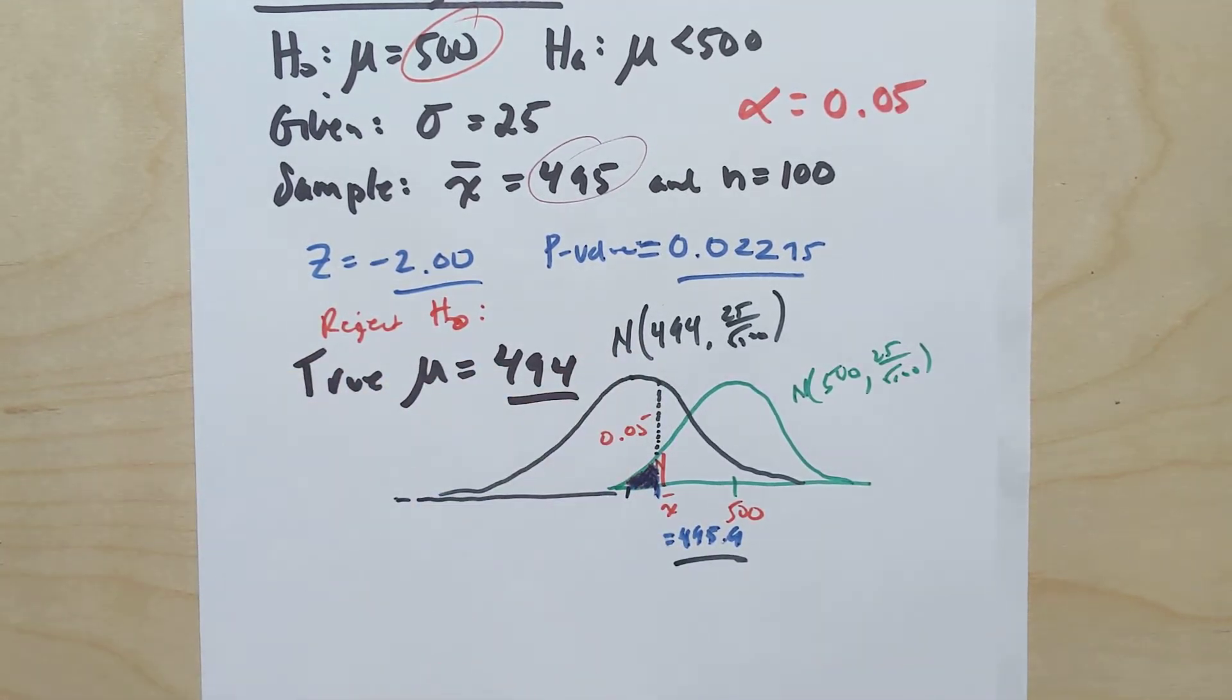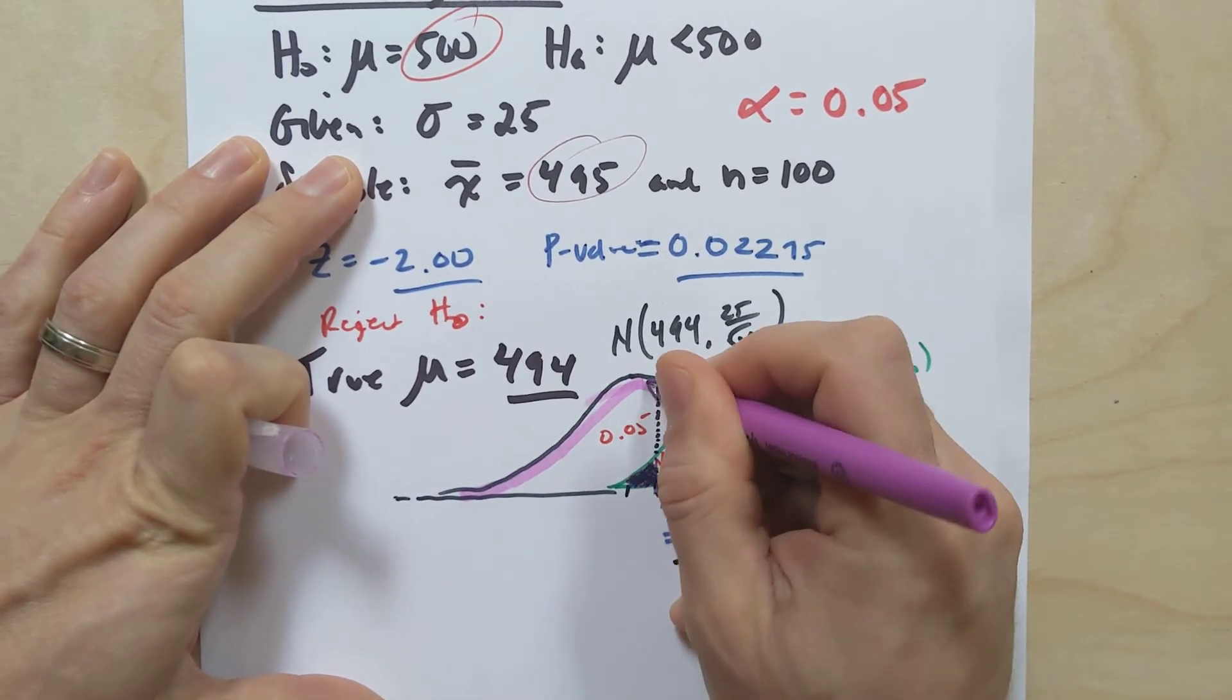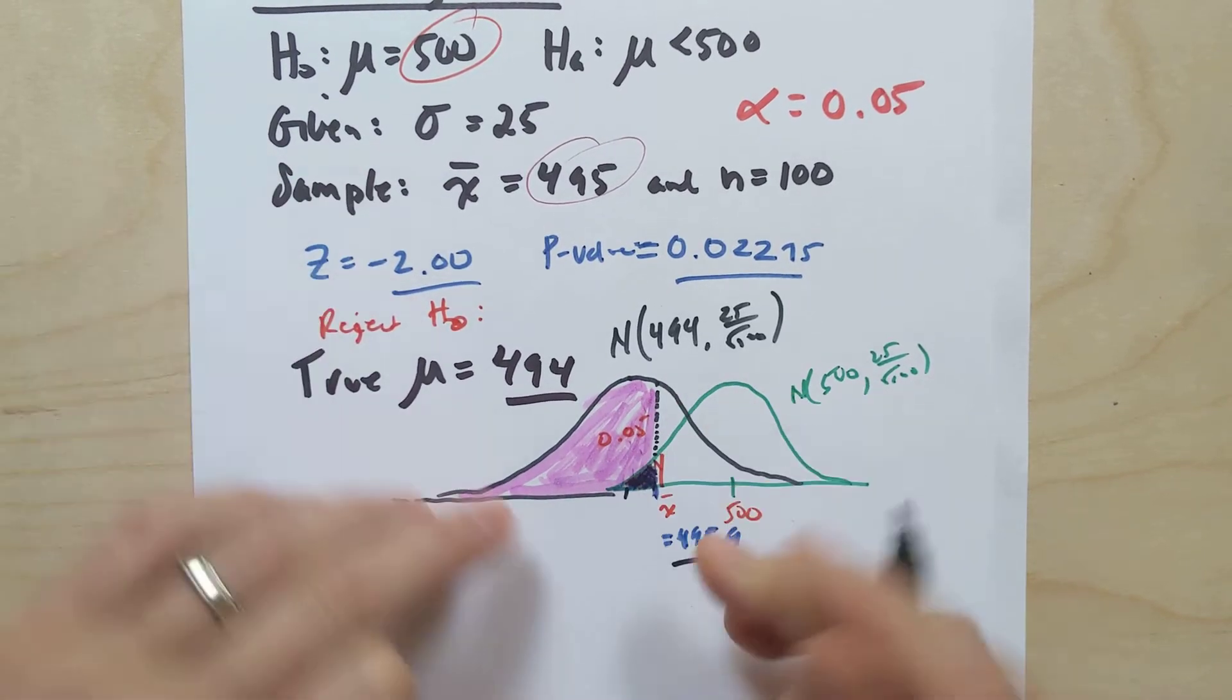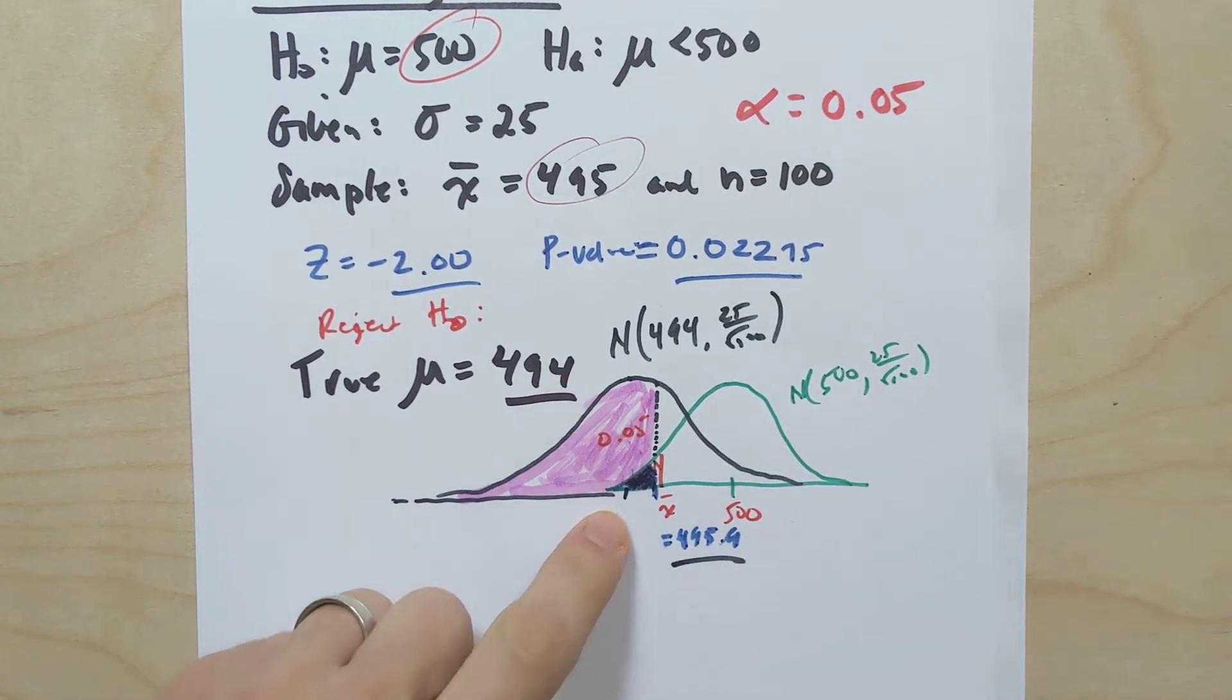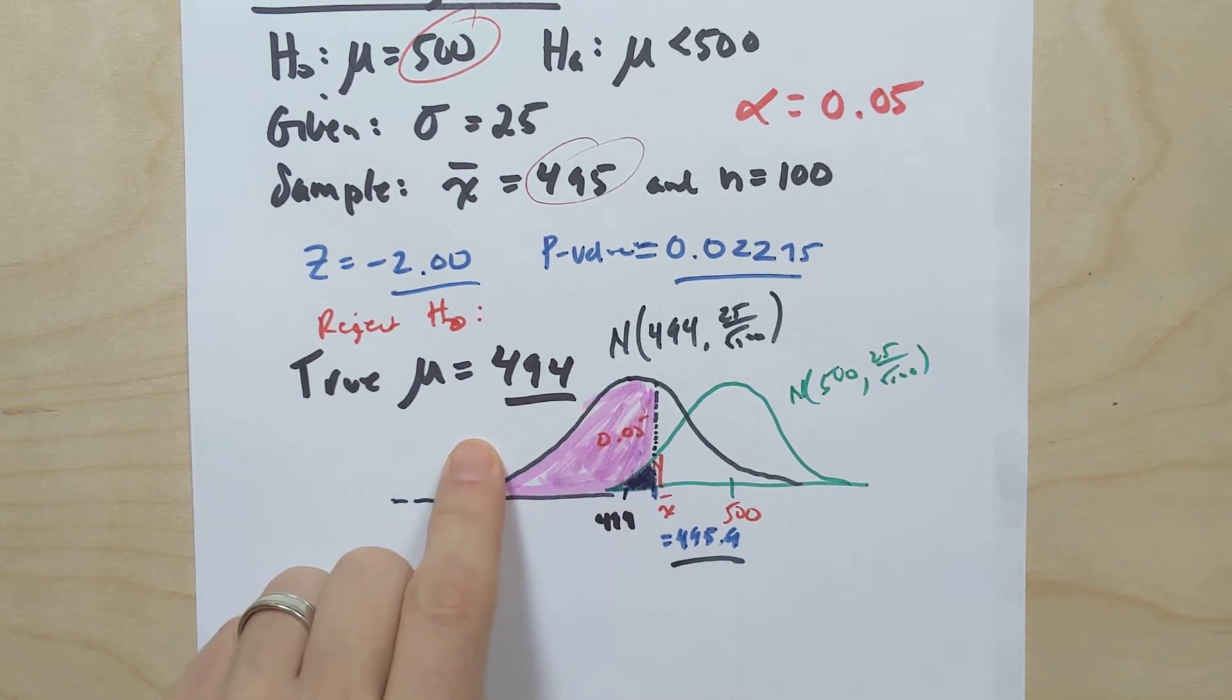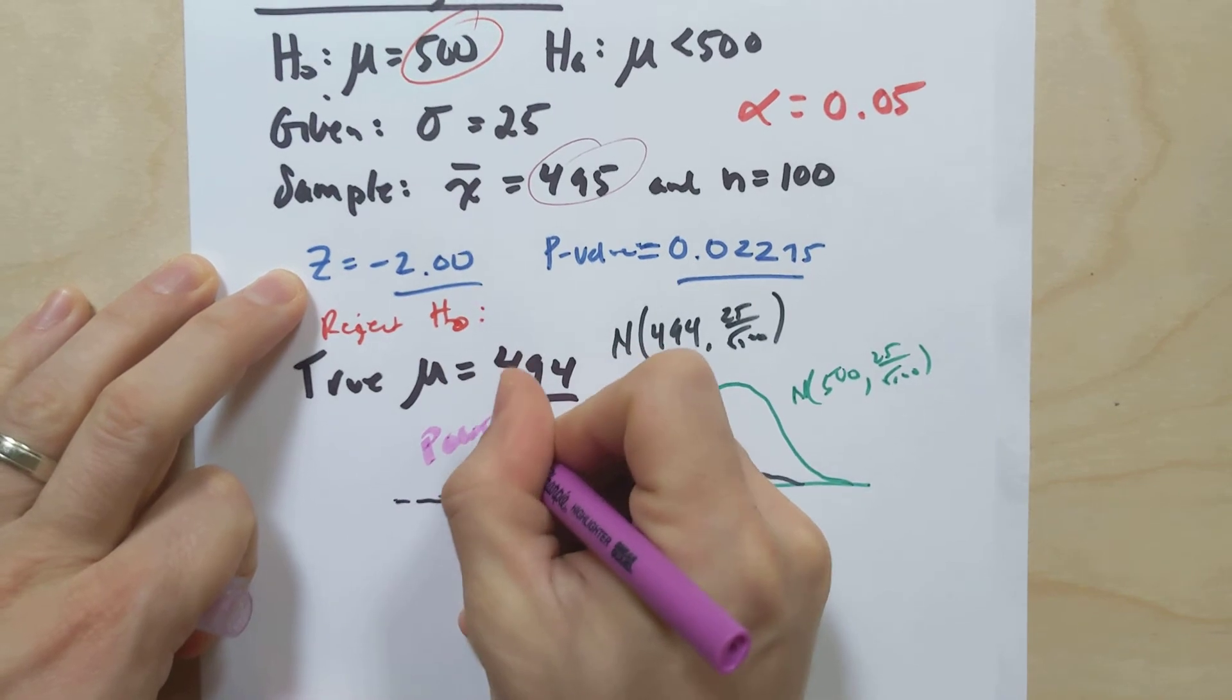And so now this guy, if I want to talk about the power of the test, I'll say, how likely was it for me in reality to get a sample mean that was less than 495.9, right? Based on the true distribution itself. Well, if I want to know that I can shade everything to the left here. And everything I shade now, based on the null hypothesis, there should have only been a 5% chance that I would accomplish this. If the null hypothesis were true, but now we know that the truth was 494, right? So everything this way, this guy now is the power. This is the power of the test.